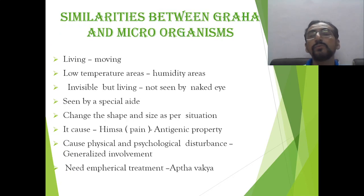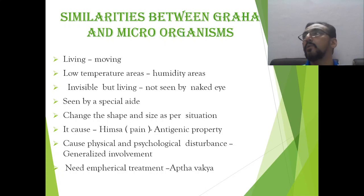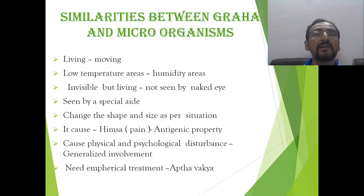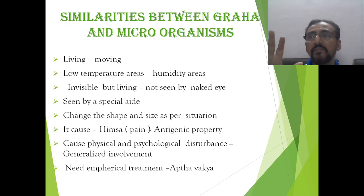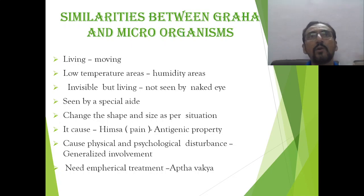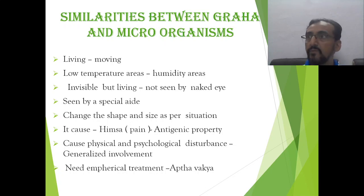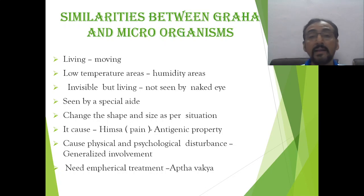Now we have to compare these grahas with the present contemporary knowledge. I have explained all the qualities of the grahas as mentioned in the classics. Now, which part can be well compared with present-era explanation? Grahas are living and moving. They want low-temperature or humidity areas. They are invisible but living — living invisible, meaning living microscopic organisms. They are nothing but living and microscopic, not even seen by the naked eye — therefore microscopic.